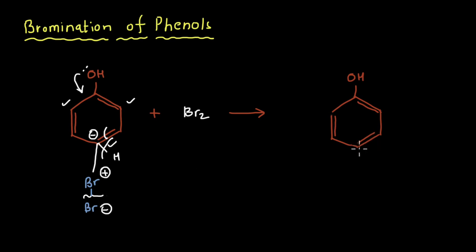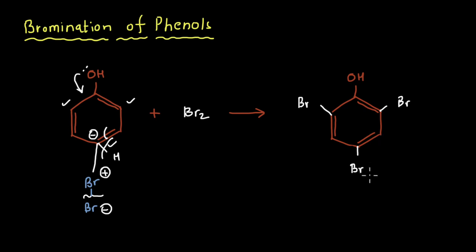The bromine gets added to the para position, but since the OH group is ortho-para directing, bromine also gets added to both of the ortho positions. What we get is 2,4,6-tribromophenol. This reaction is fun to watch in the lab because you can actually see the change in colors — bromine water has a reddish-yellowish color like rust, and as soon as you add it to the phenol, when the reaction is complete, the liquid turns colorless and there is a white precipitate at the bottom, which is our product, 2,4,6-tribromophenol.